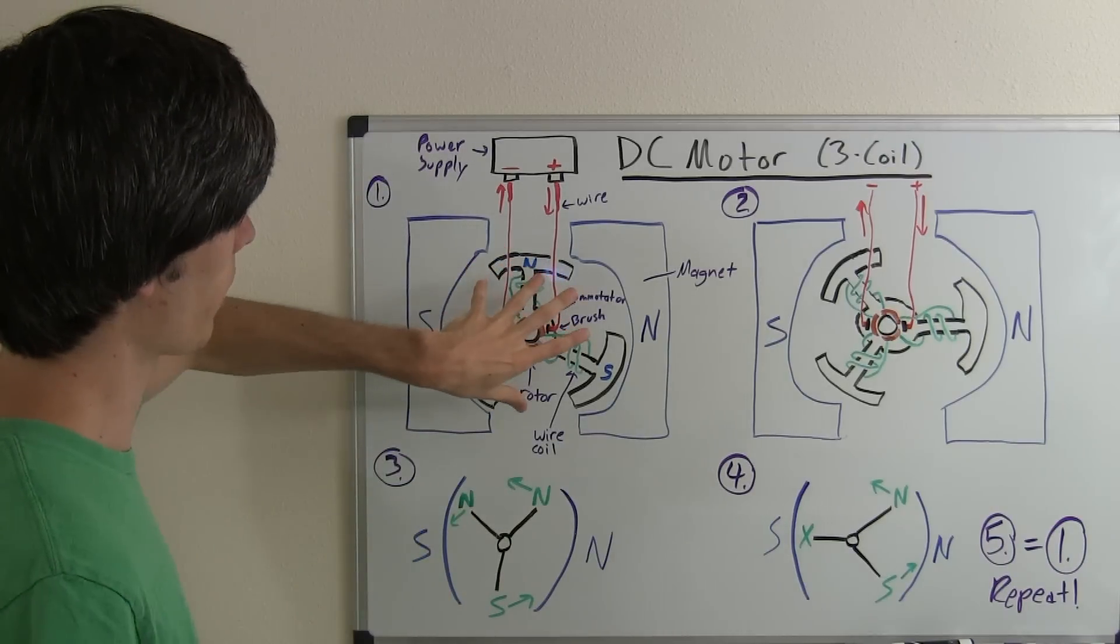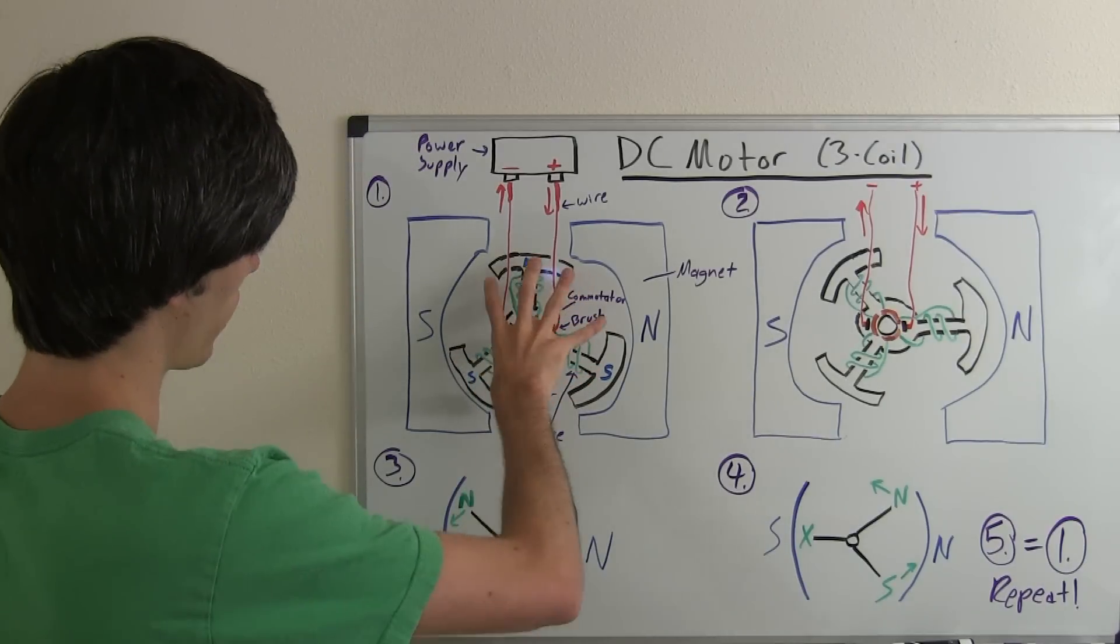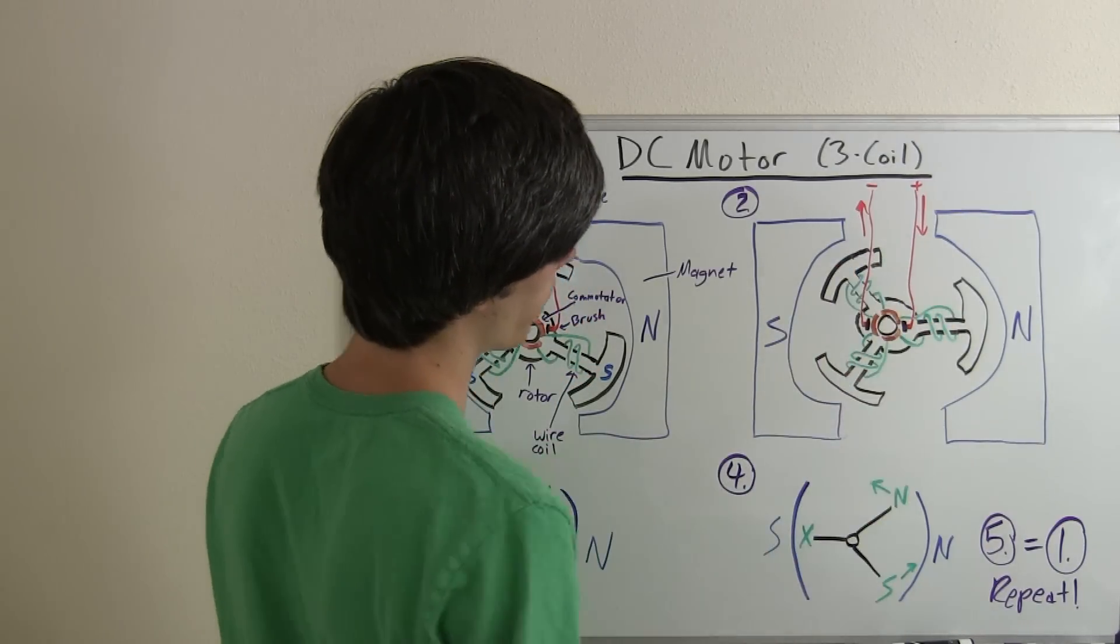Okay so there's step one. Now let's take a look at step two. So that's going to be when this rotor is slightly rotated. So it's rotated over here a bit.